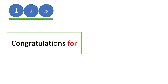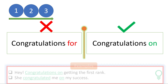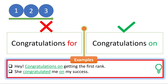Here is the third mistake: 'congratulations for' — but the correct one is 'congratulations on.' Whether you use it as a noun or a verb, you have to use 'on.' 'I congratulate you on your success.' 'Congratulations on your success.' Look at these examples: 'Hey, congratulations on getting the first rank.' 'She congratulated me on my success.' Do not say 'for my success' or 'for getting the first rank.' Be careful.